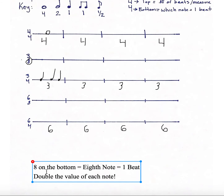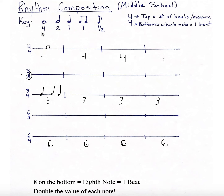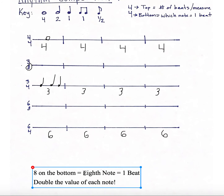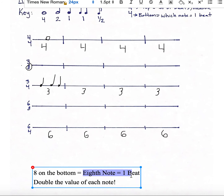So just as a review: when 8 is on the bottom, the eighth note now equals 1 beat and you're going to double the value of each note. This key is true for any time the 4 is on the bottom. When we switch to having 8 on the bottom, you need to change your key by doubling the value of all the notes. So in 6/8 or 3/8 time, your whole note is now going to equal 8, your half note is now going to equal 4, your quarter note and beamed eighth notes now equal 2, and your eighth note now equals 1.